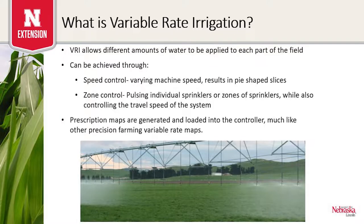Variable rate irrigation, or VRI, allows us to apply different amounts of water in different areas of the field based on characteristics like soil types, topography, or known issues in certain areas. There are a few different methods to do this with center pivot machines. The first is speed control — varying the speed of the machine as it goes around the field. Going faster applies less water; slowing down applies more. All center pivot machines are capable of this directly from the factory, but the challenge is that it only creates pie-shaped slices, meaning big chunks of the field.